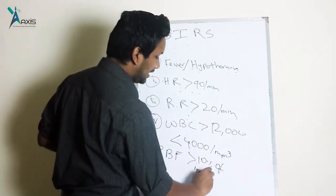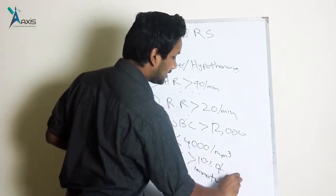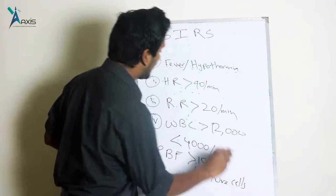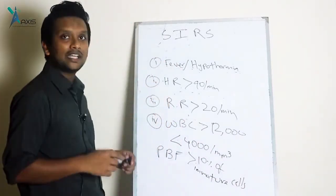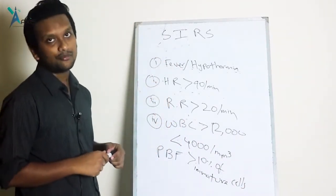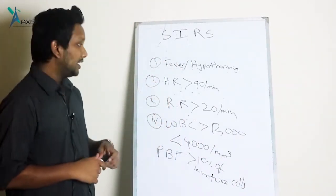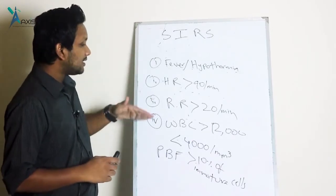The fourth criterion is WBC count either greater than 12,000 or less than 4,000 per mm³, or band forms — immature cells — more than 10%. Any two of these conditions together constitute systemic inflammatory response syndrome.